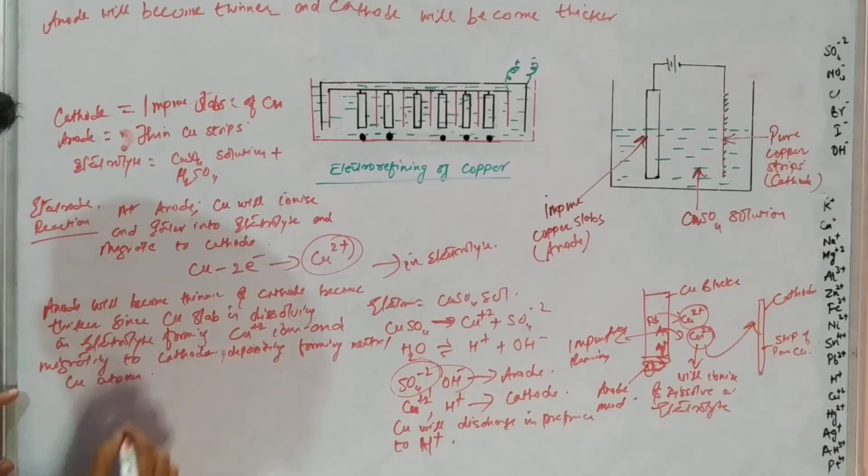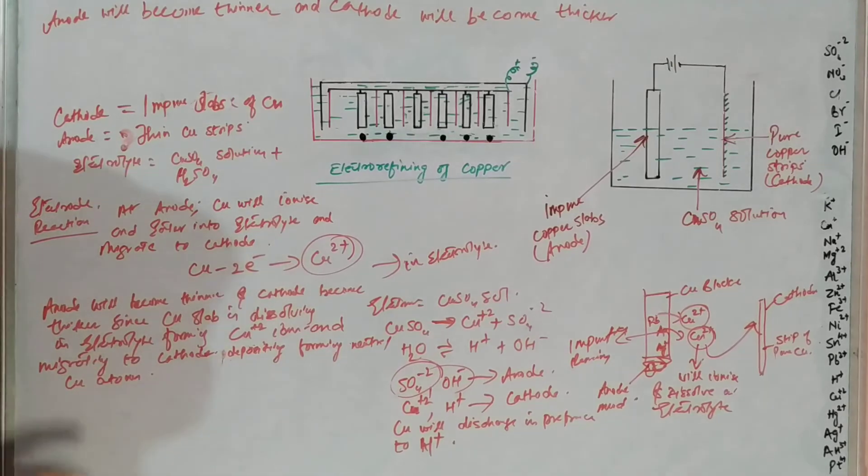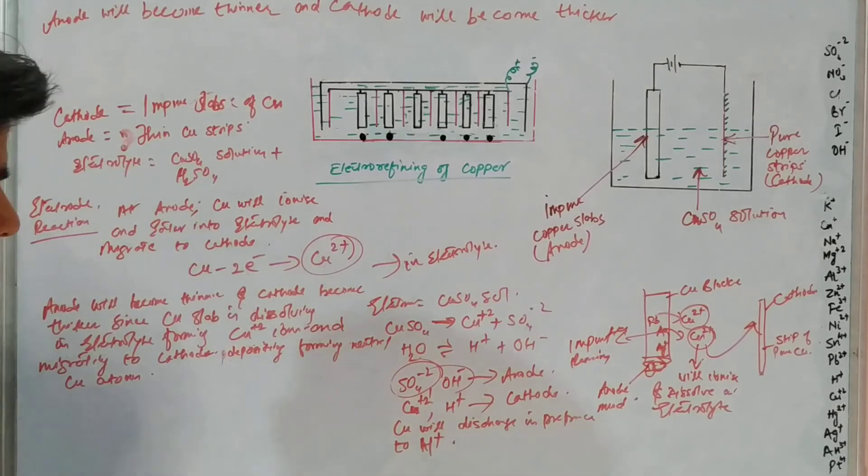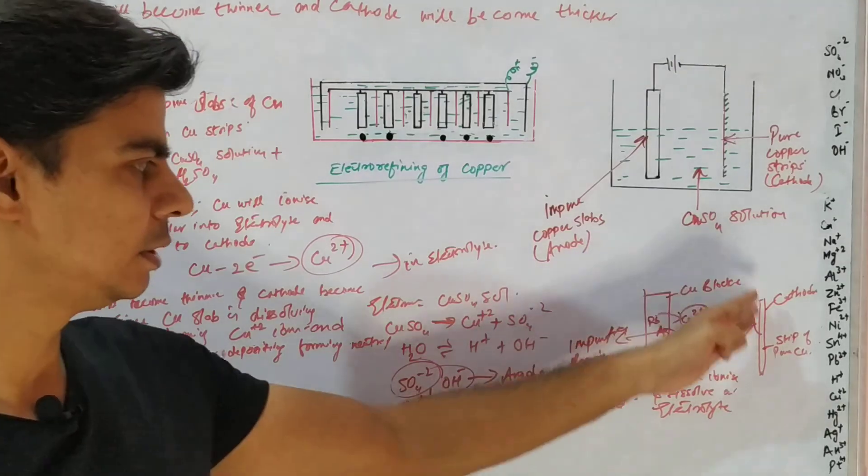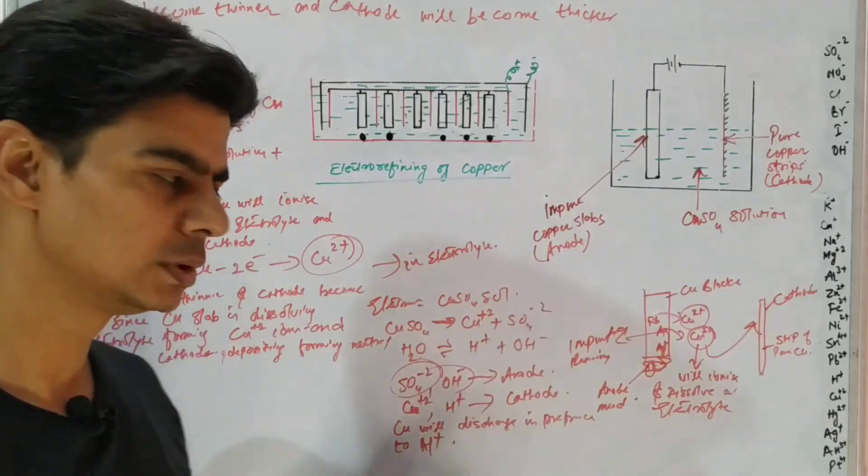You will see that the anode will become thin and the cathode will become thick.